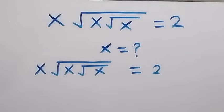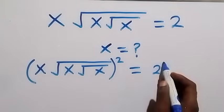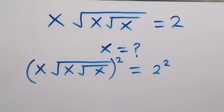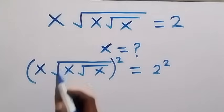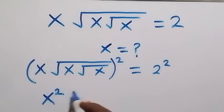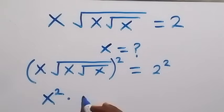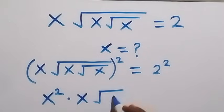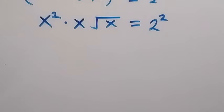From here, let's take the square on both sides. We square this side and also square this side. The square will affect x and also affect the square root, so we are going to have x squared, then multiplied — the square will cancel the square roots and we have x root x left here, equals to 2 squared.